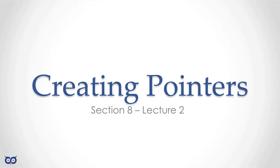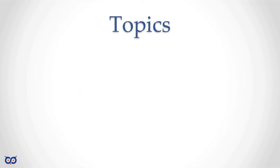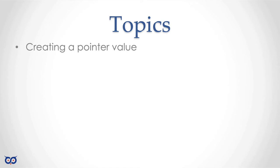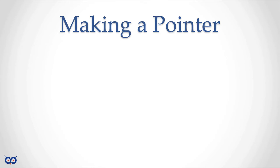Welcome to Section 8, Lecture 2: Creating Pointers. In the previous lecture we were looking at how to declare a pointer and specifically what a pointer is, and then how to declare them. We saw that once you declare a pointer, it had an initial value of nil regardless of the type. Now we're going to look at how you can create a pointer and give it a proper value. We're going to use the address-of operator to do this, and then we'll see a second way of creating pointers using the new function.